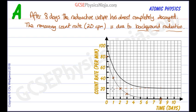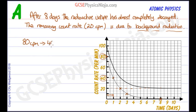Now we can make a half-life calculation. We start at 80 counts per minute. Remember that half-life is the time taken for half the radioactive nuclei to decay. So starting at 80, the time taken to reach 40 counts per minute gives us our first half-life estimate of 1 day.